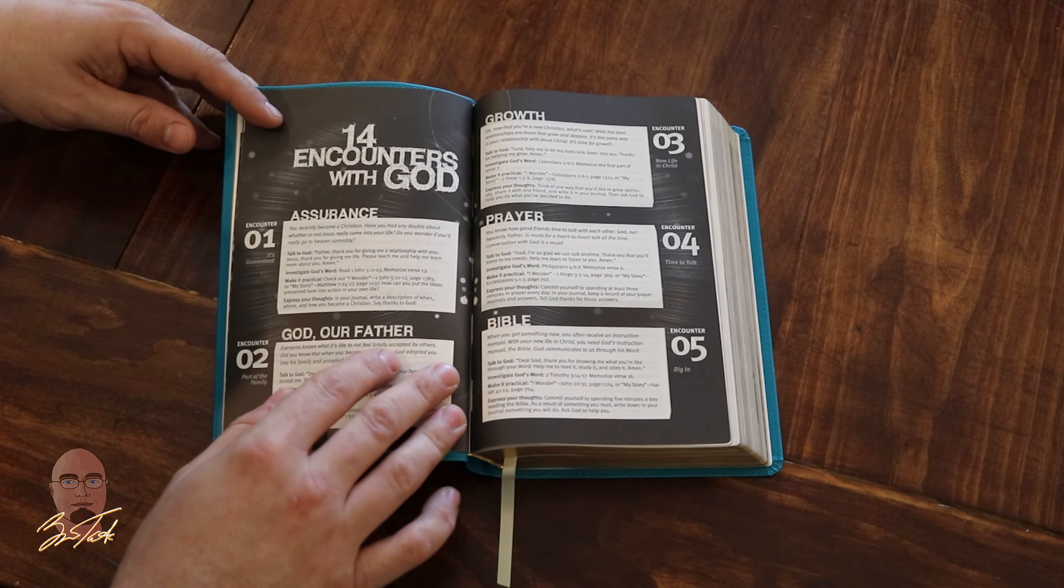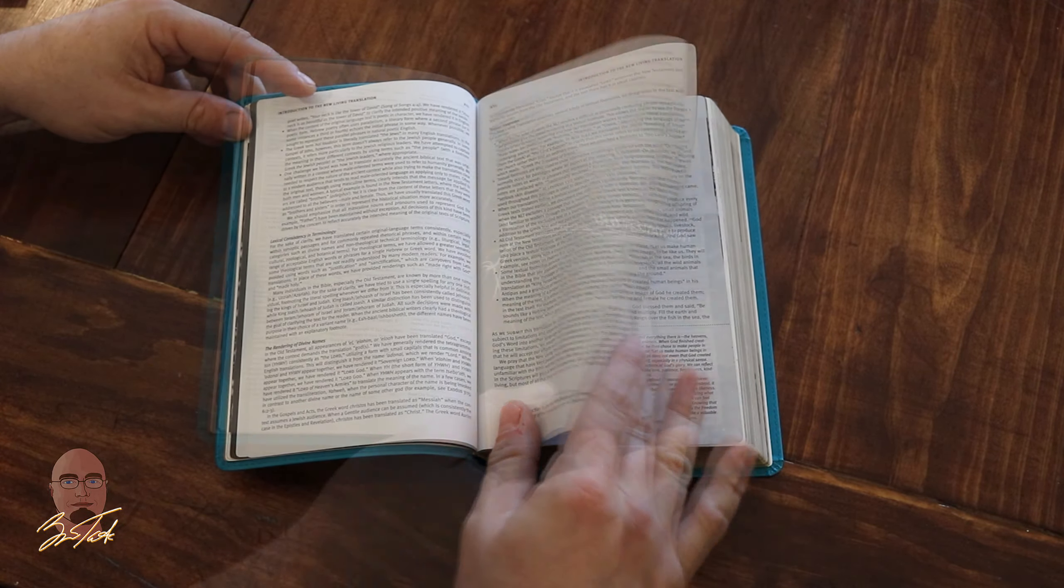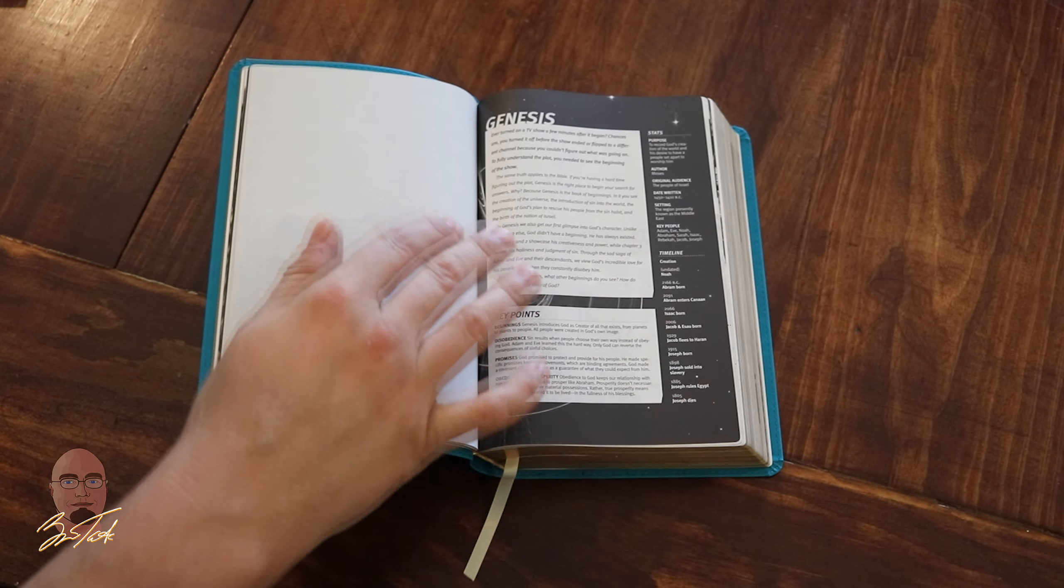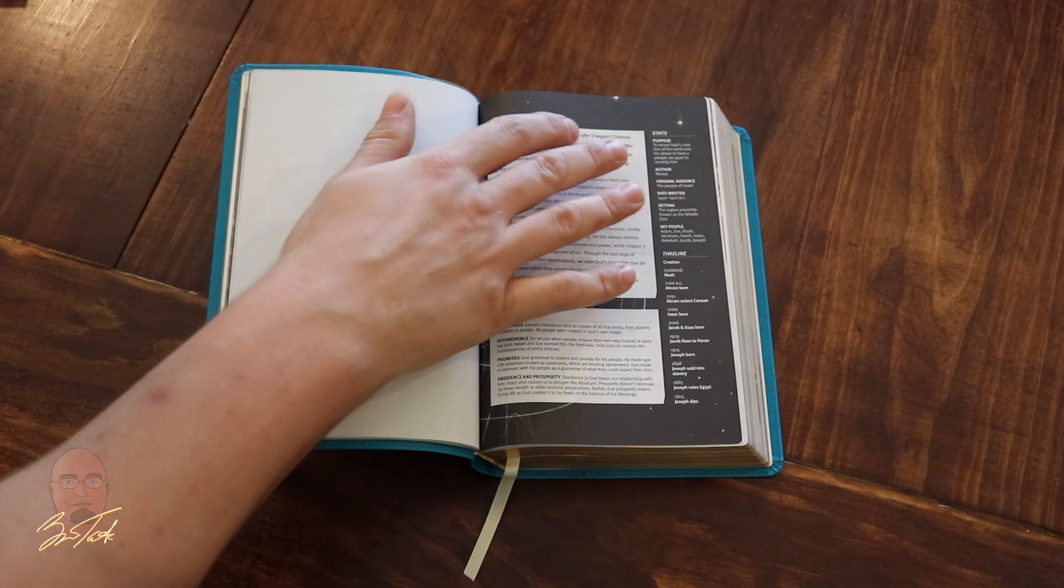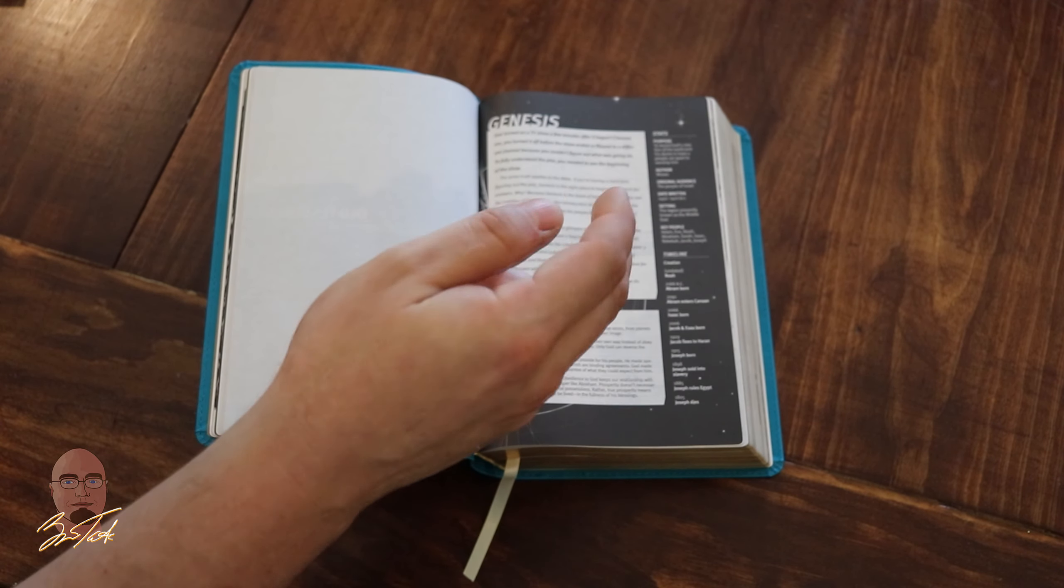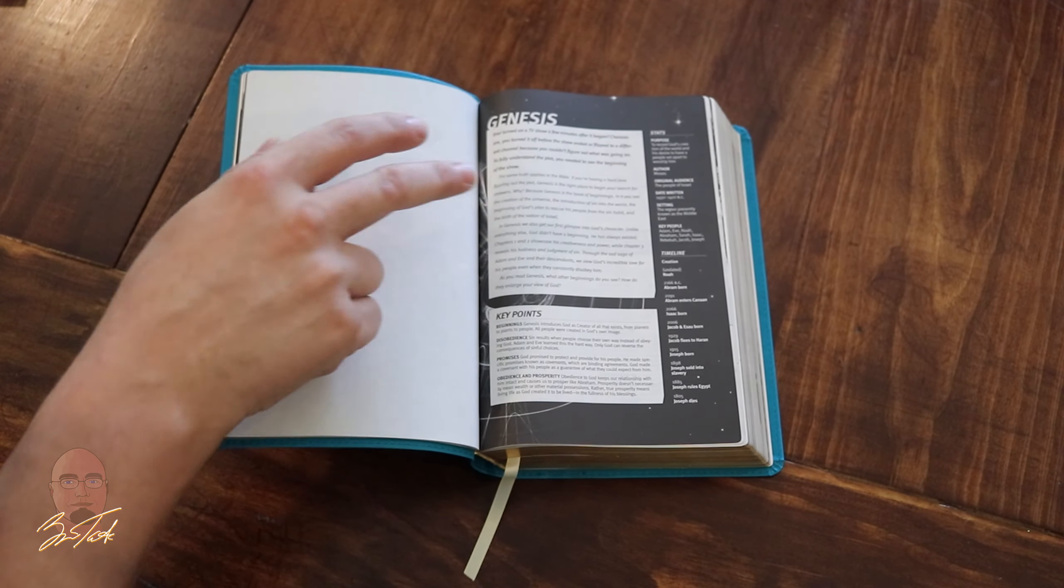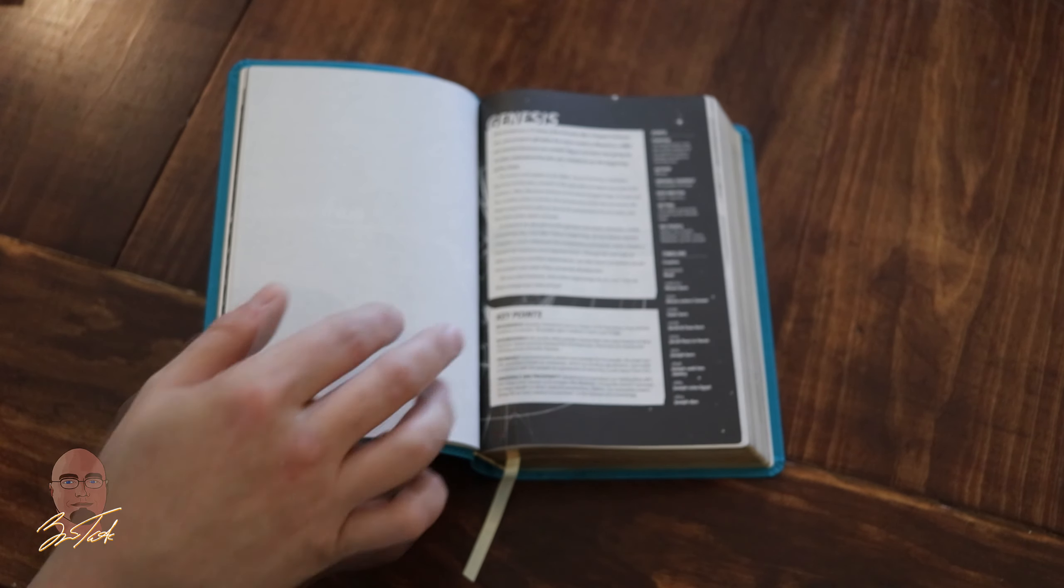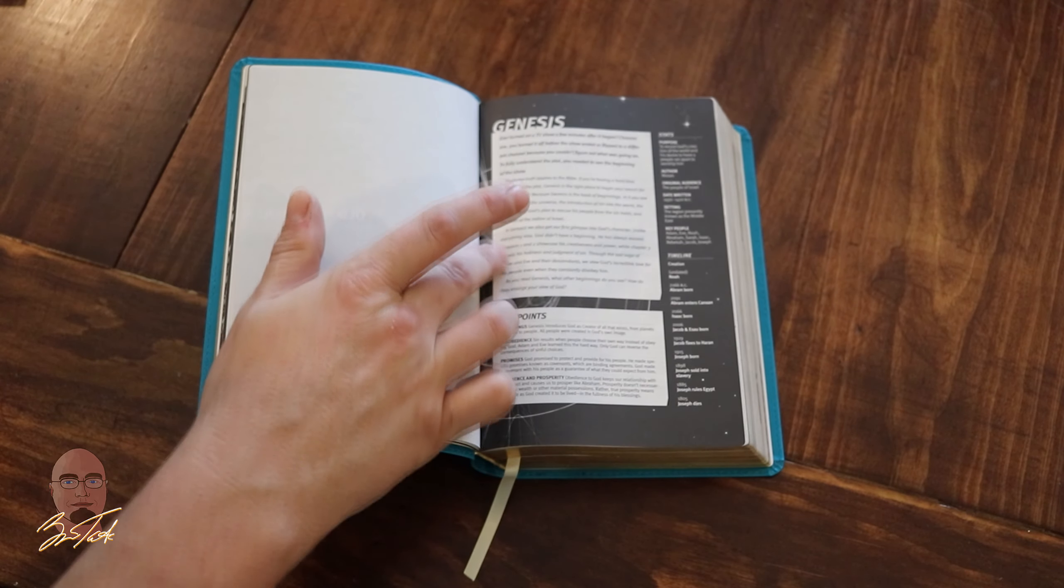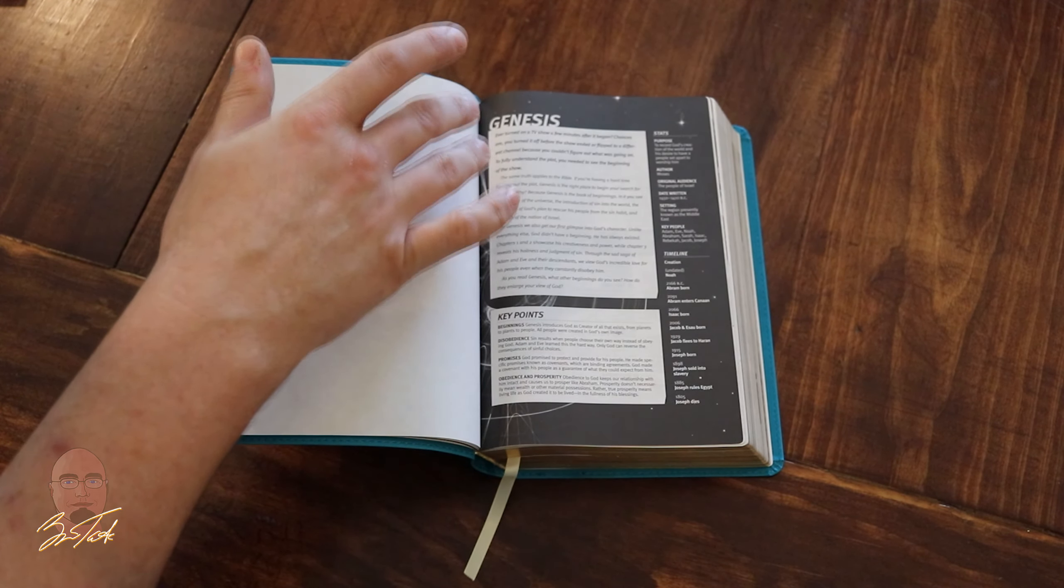Fourteen Encounters with God, introduction to the New Living Translation, then you'll get to the text. At the beginning of each chapter you'll have a book introduction. On the far margin you have a stats section which will have a lot of important information: the purpose of the Bible, the author, time frame, and then you have the all-important timeline. Then you see the book introduction itself, the paragraph explaining what's going on in this book.